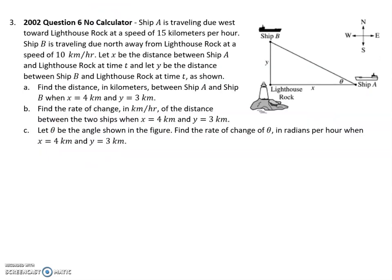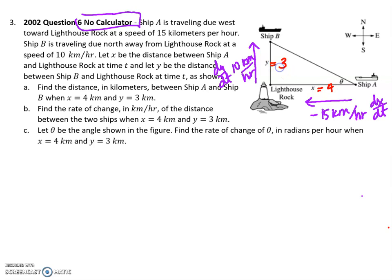This, I can tell right away, which is no calculator by the way, is talking about rate of change and things like that. This is probably a related rates question. Ship A is traveling due west, so it's headed this way, toward a lighthouse rock at a speed of 15 km per hour. This side is getting smaller, which means that's a negative speed. Ship B is traveling north, so that one is going away, which means it does have a positive speed. This guy is my dx/dt, my rate of change of my x. This guy is my dy/dt.